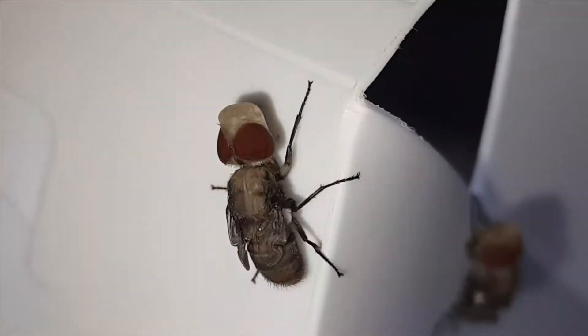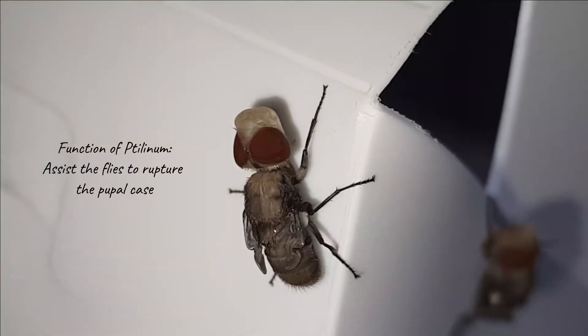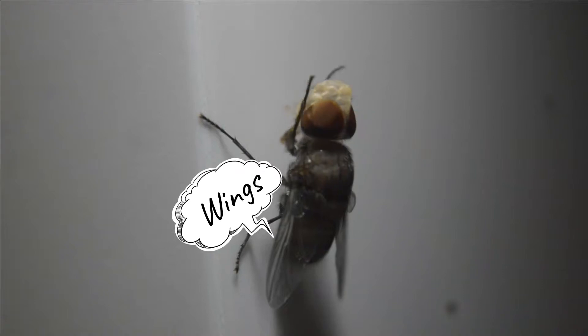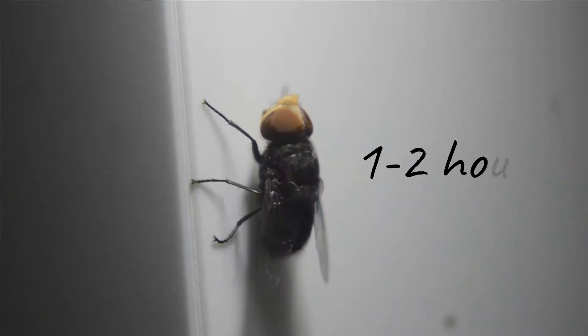The ptilinum was used to assist the fly to break the pupal case for their emergence. With time, the wings started to spread and after 1 to 2 hours, they will gain their pigmentation and then they are ready to fly.